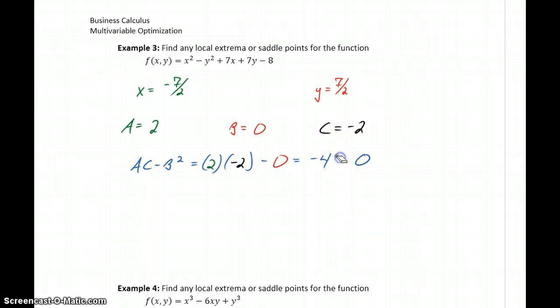In this case, as soon as we end up with that negative result, what this tells us is that f of negative 7 halves, positive 7 halves is a saddle point. So we found a saddle point, which means there are no extrema for this function, no local extrema for this function.